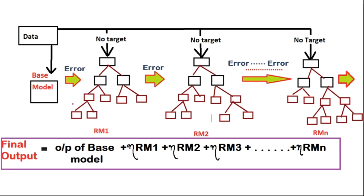Let me give a brief overview of how it works. Gradient boosting is used for both classification and regression, but it's mostly used for classification. Today I'll take an example of regression. I have drafted a flowchart: this is my original data with X (independent) and Y (dependent variables). First we make a base model — it's just an average model, better than random guessing.